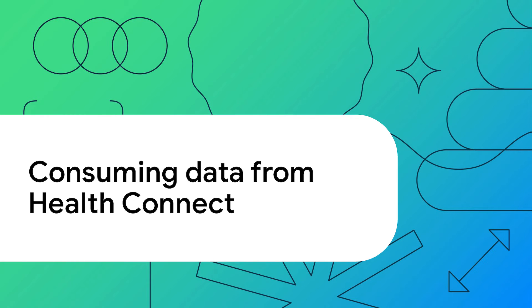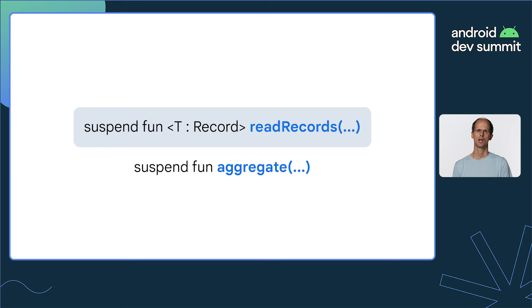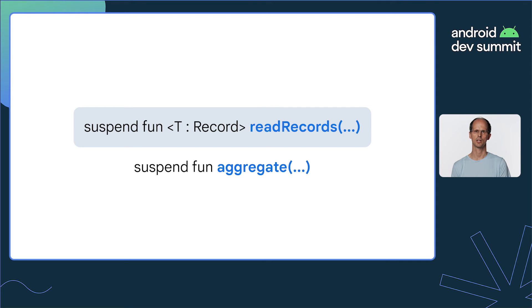Now we've seen how to contribute data to HealthConnect, let's look at how your app can consume HealthConnect data. HealthConnect provides API methods for simply reading data, such as readRecords and aggregate methods shown here. However, to keep your app's data store up to date with HealthConnect on an ongoing basis, use the Changes Sync API.